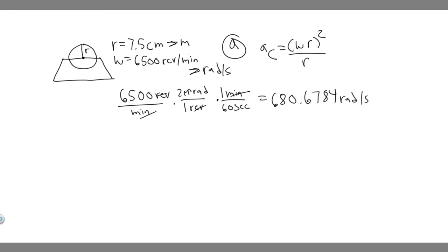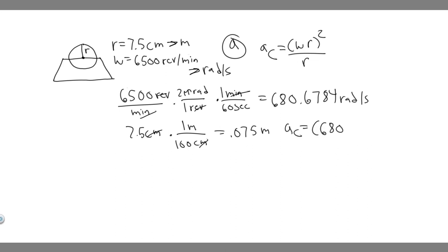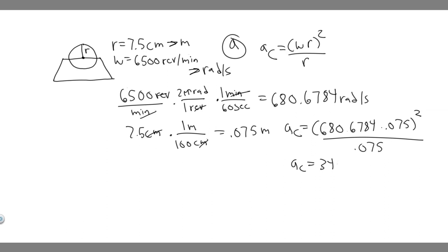Now we need the radius in the correct units. 7.5 centimeters converts to 0.075 meters, since there are 100 centimeters per meter. Now we plug in: A sub C equals 680.6784 squared times 0.075, all over 0.075.